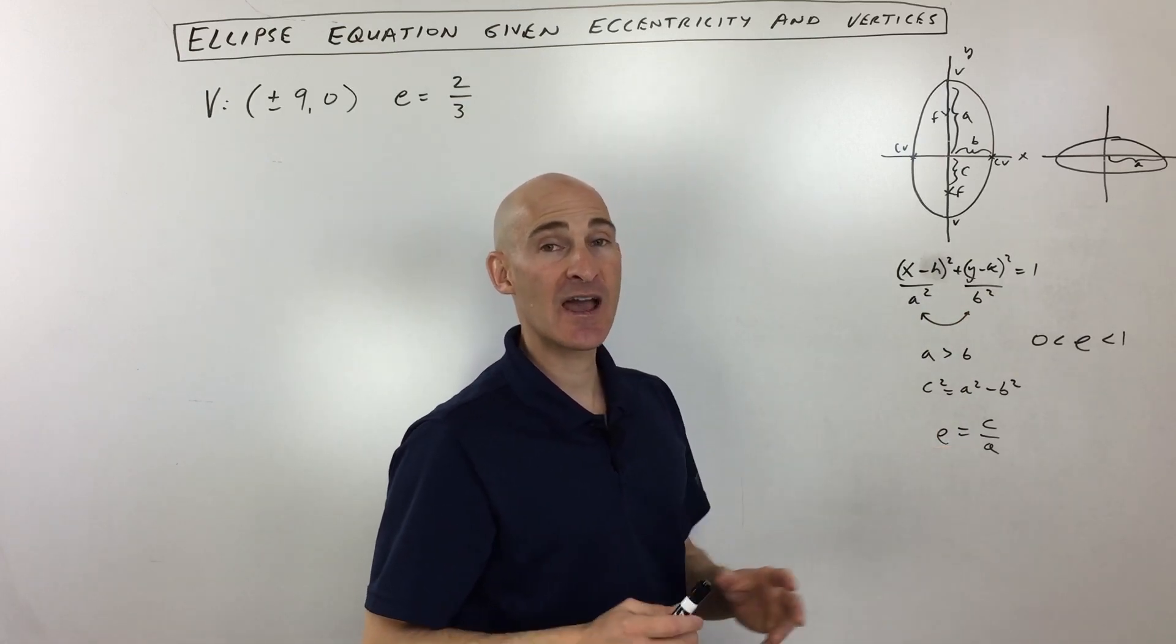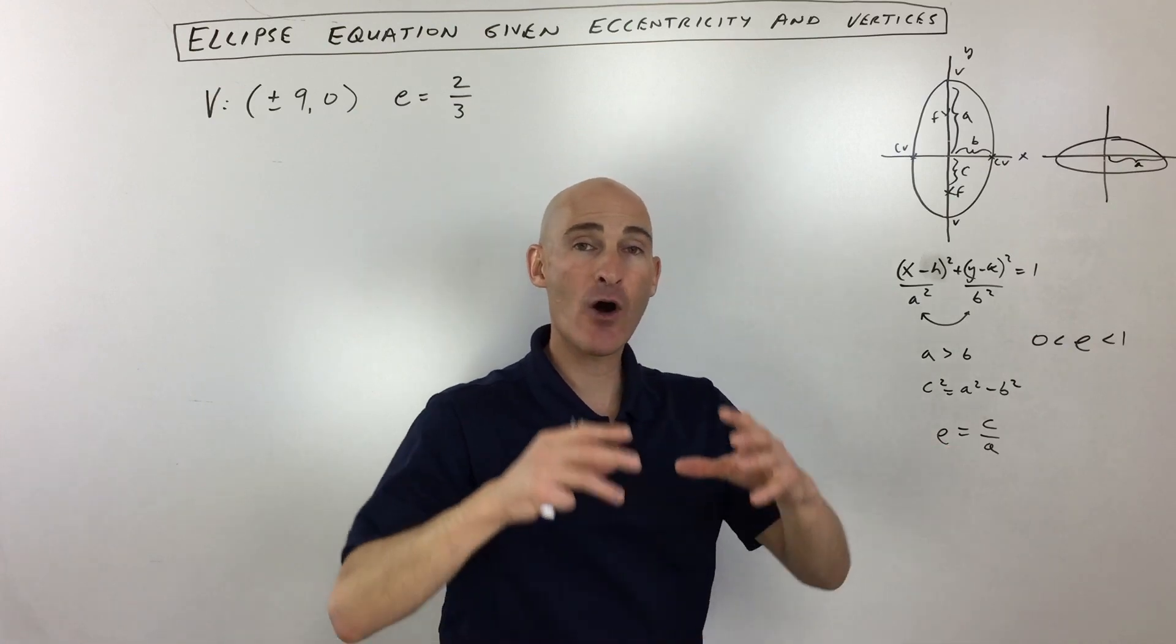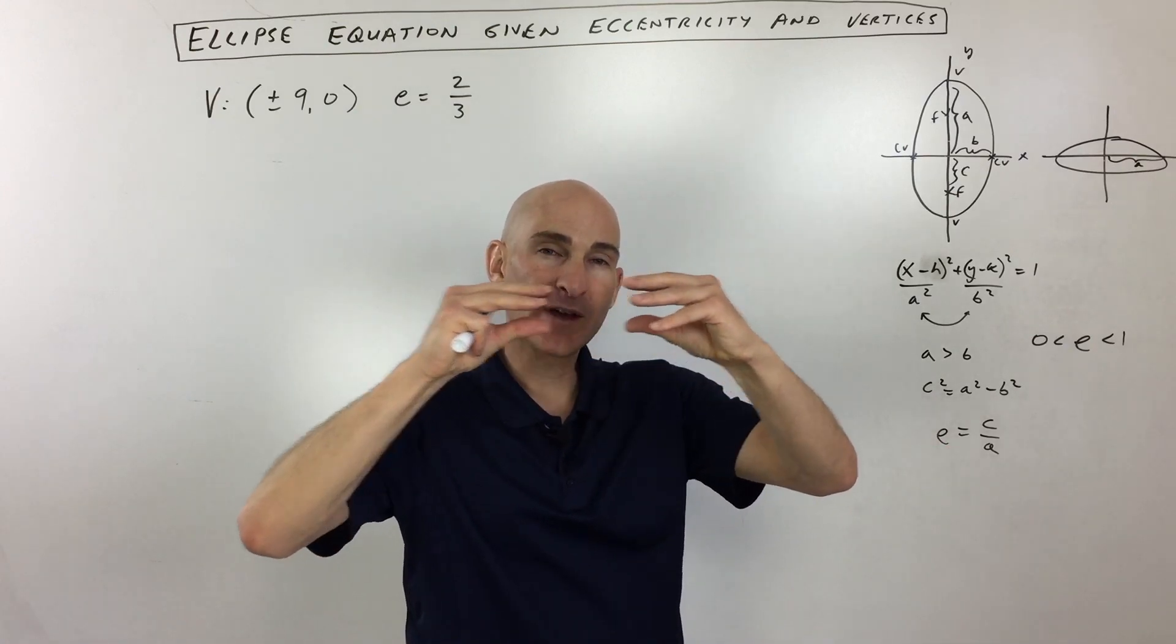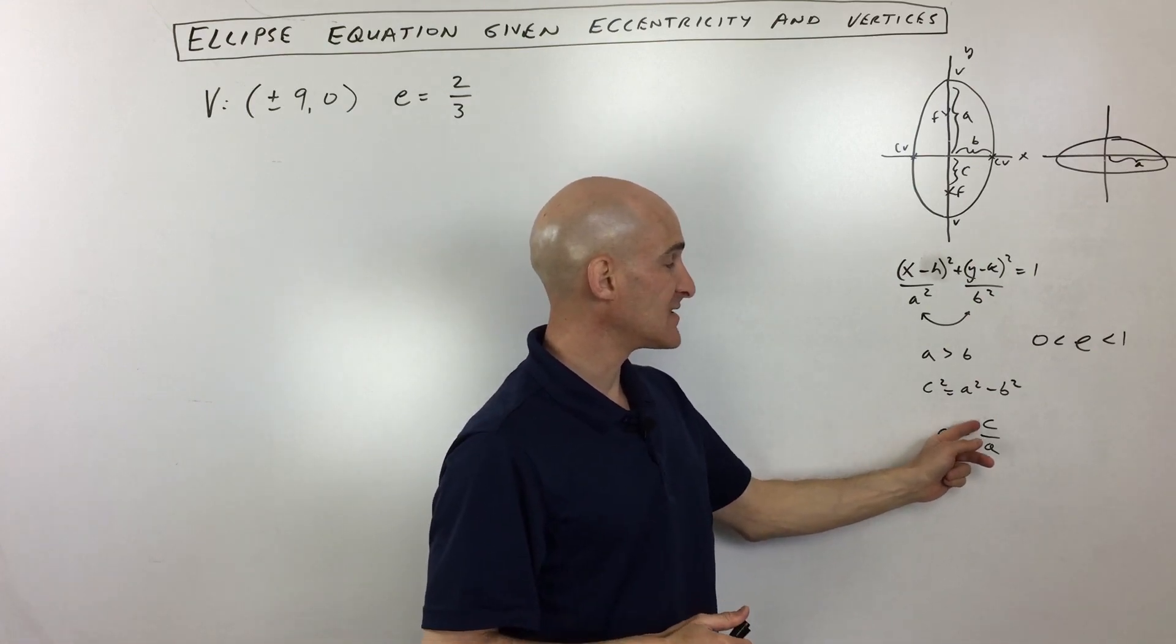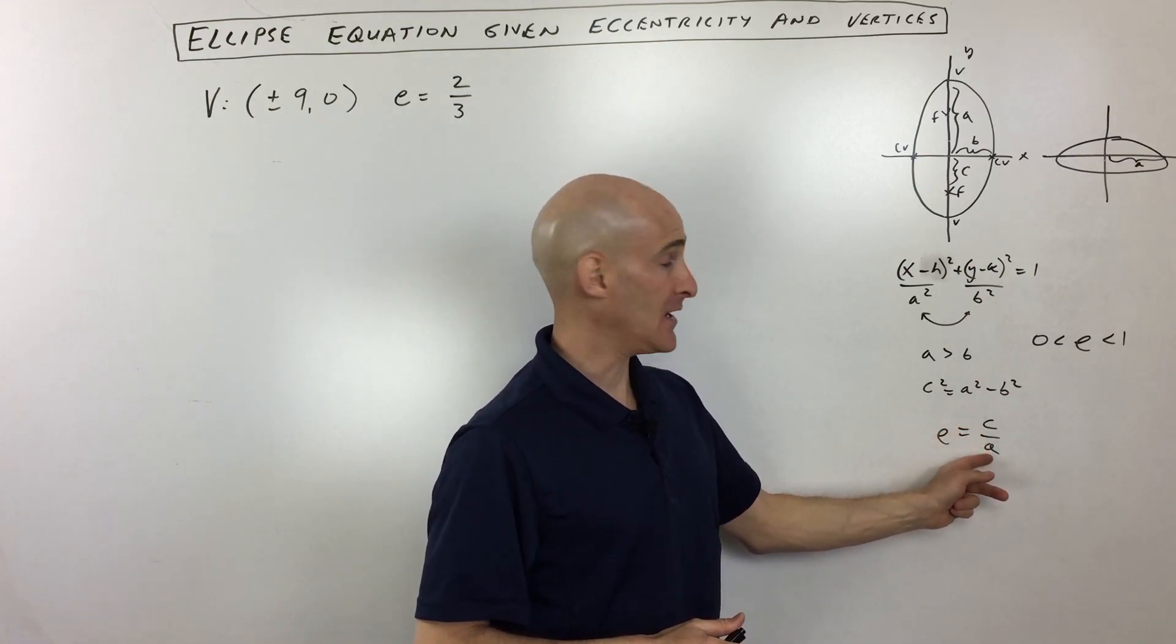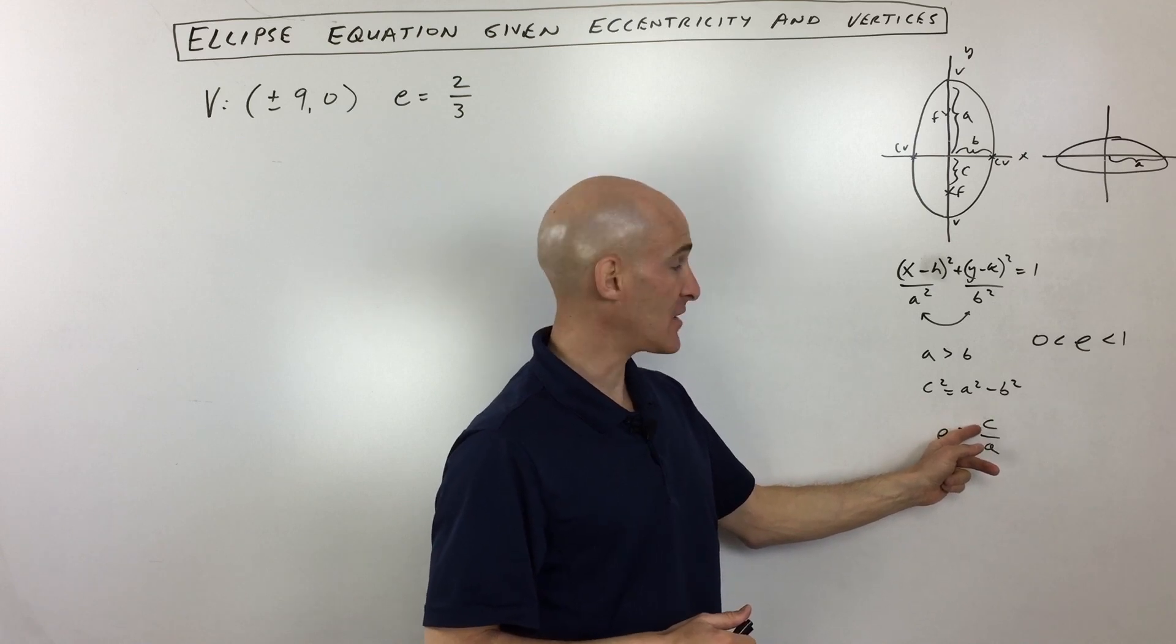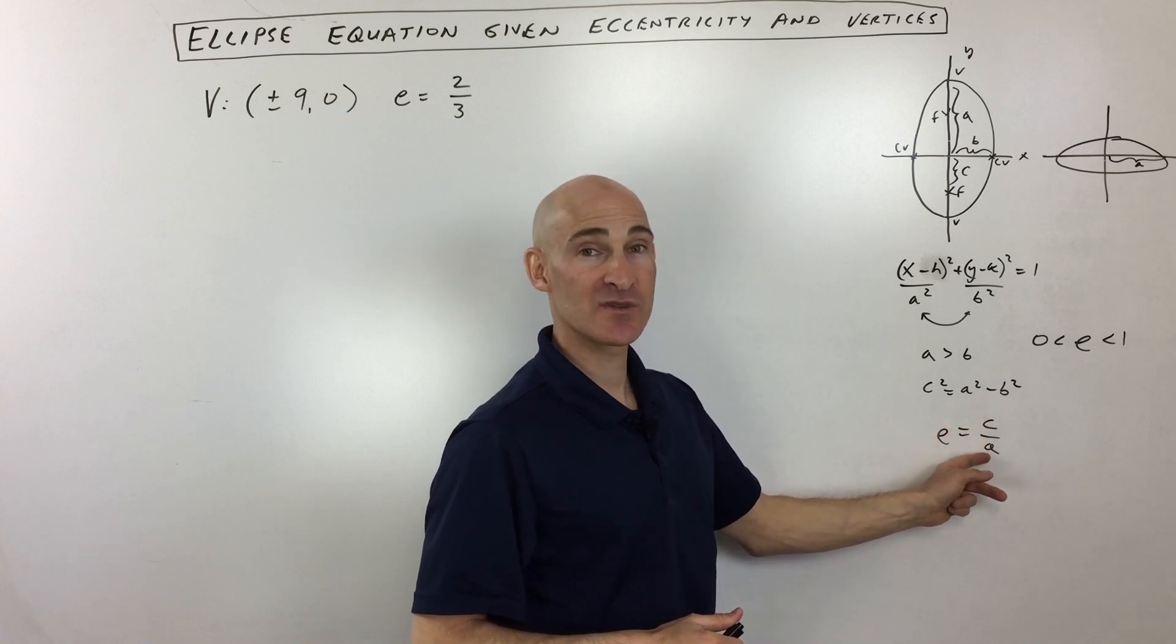And then the last thing is talking about the eccentricity. Eccentricity just gives you an idea about how round the ellipse is or how narrow and stretched, you know, thin the ellipse is. And the formula for eccentricity is equal to c divided by a—so the distance from the center to the focus divided by the distance from the center to the vertex.